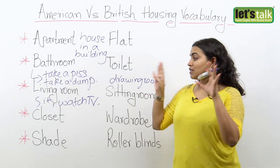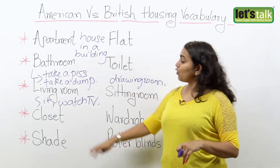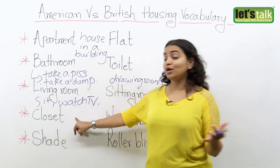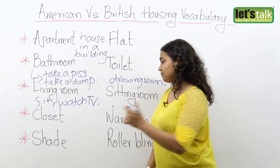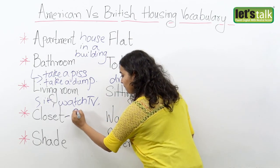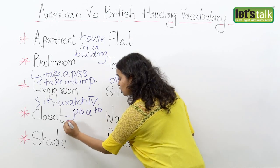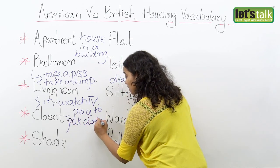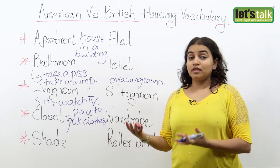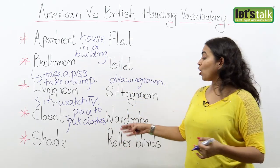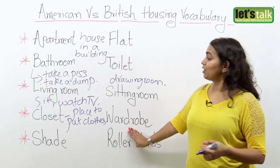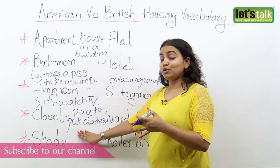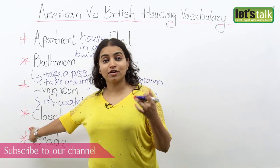When you go into the bedroom, that's obviously where you keep your clothes. Americans keep their clothes in a closet — it's the place where you store your clothes. But the English call it the wardrobe. So you put clothes in a wardrobe if you are in England, but in a closet if you are in America.